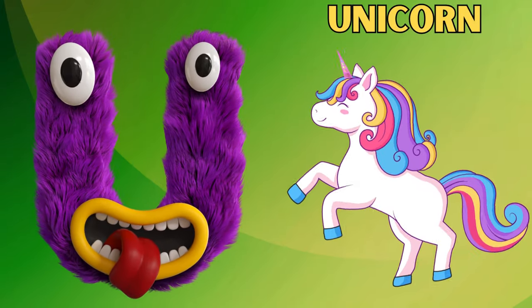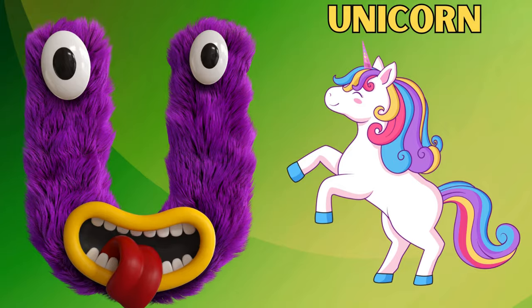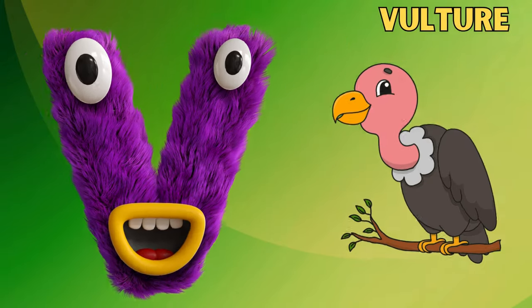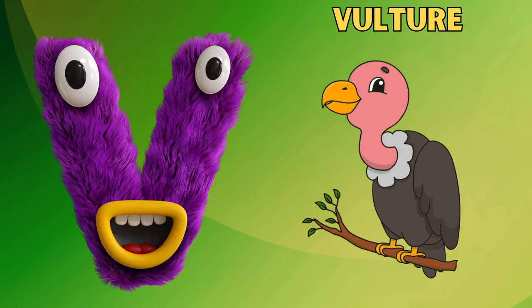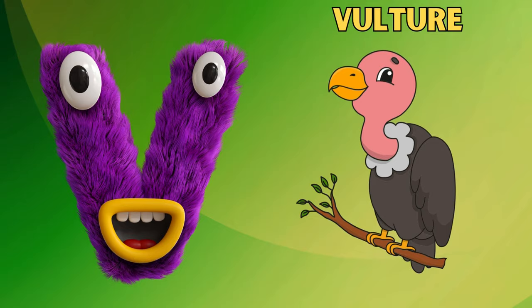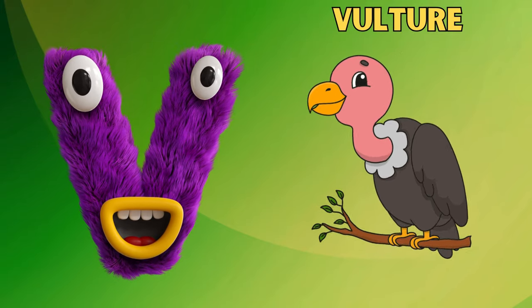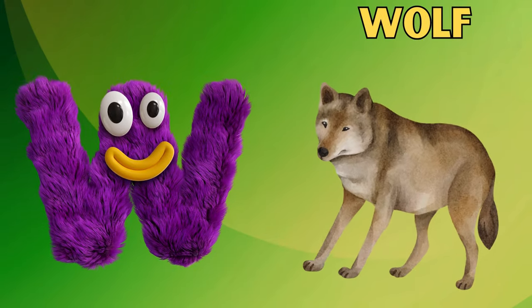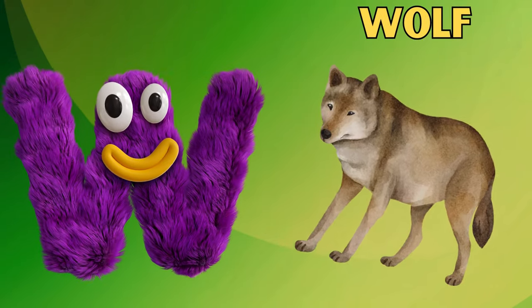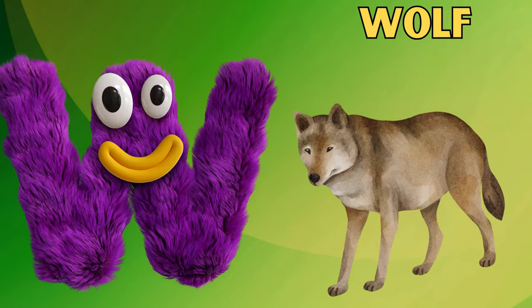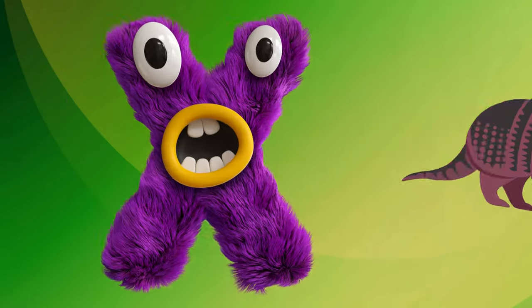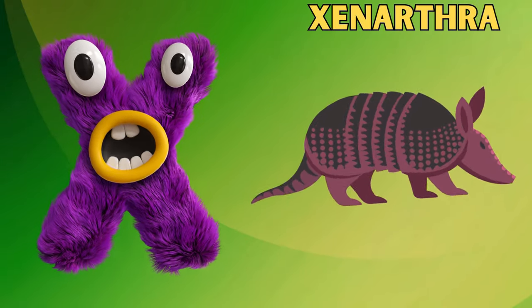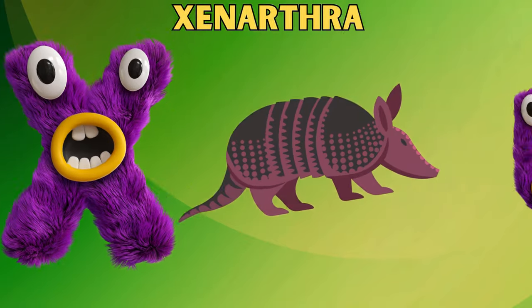U is for Unicorn. Unicorn. V is for Vulture. Vulture. W is for Wolf. Wolf. X is for Xenarthra. Xenarthra.